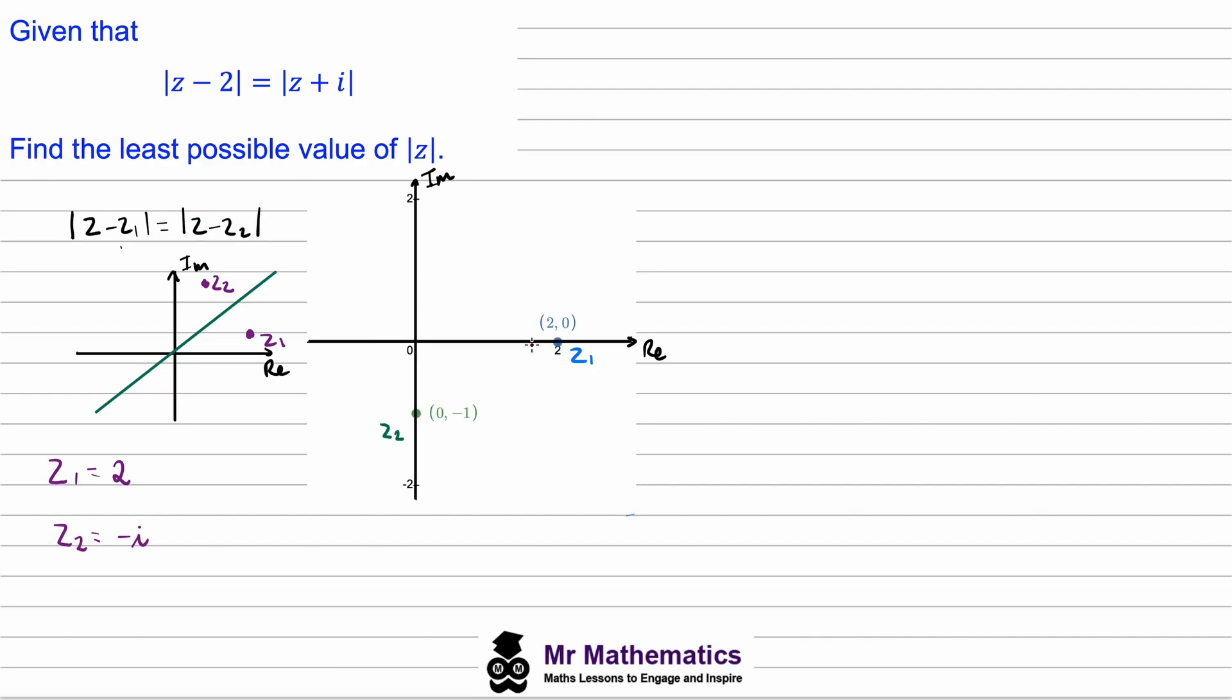If these are our two fixed points, we know the locus of the points between them will be the perpendicular bisector. What we've been asked to do is to work out the least possible magnitude of z, but we know that z must lie along this perpendicular bisector.